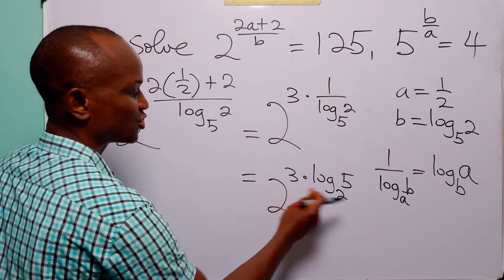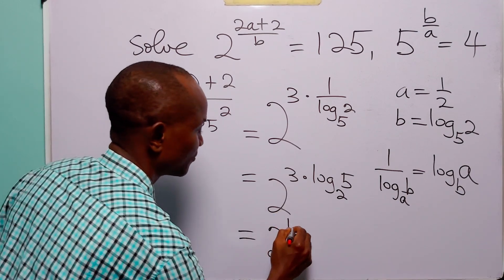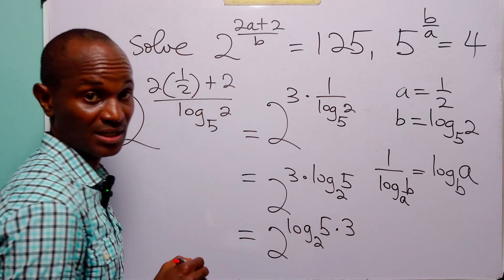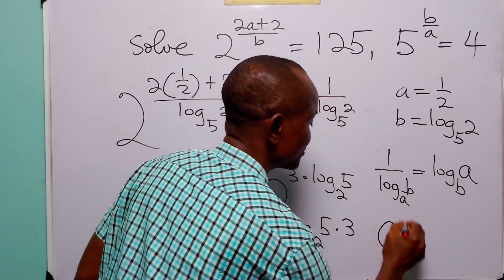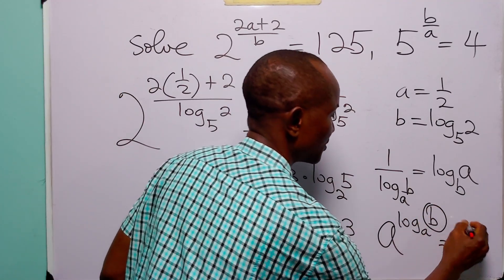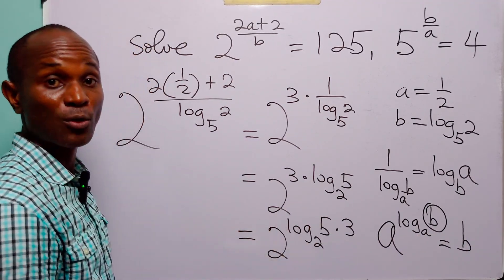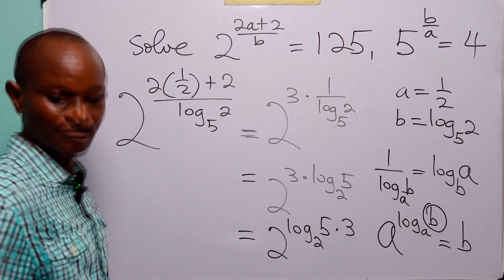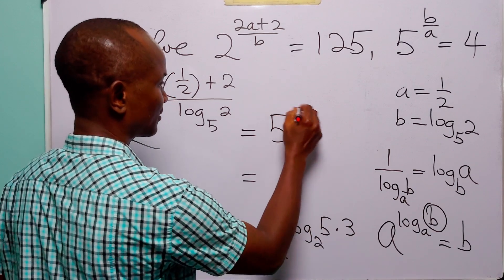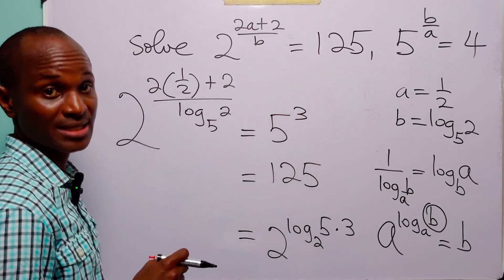We can switch the places of these two powers, giving 2 to the power (log base 2 of 5), all raised to the power 3. And we know that A to the power (log base A of B) equals B, so 2 to the power (log base 2 of 5) is simply 5. So we have 5 to the power 3, which equals 125 — exactly what we have on the right-hand side.